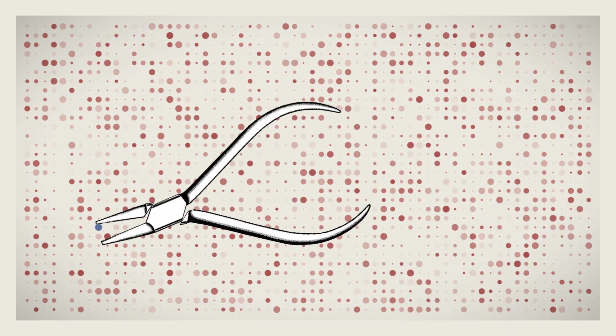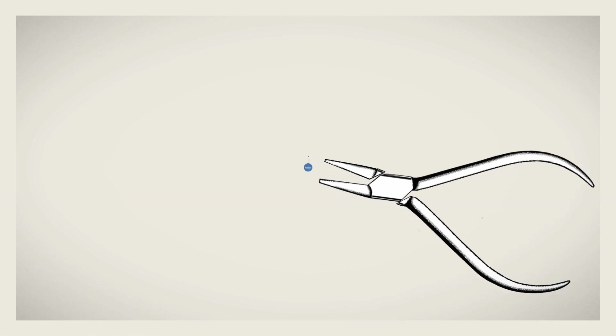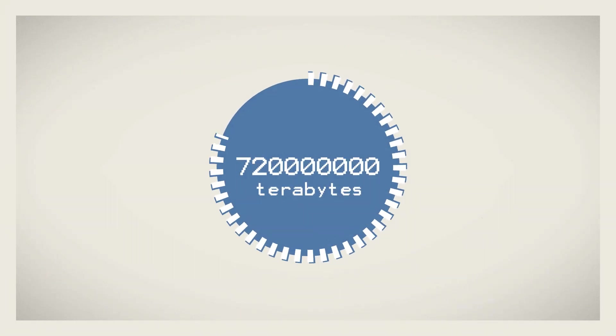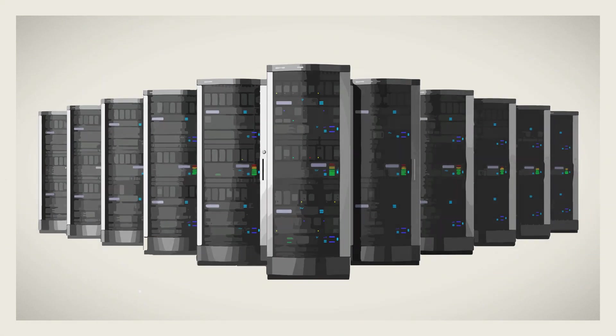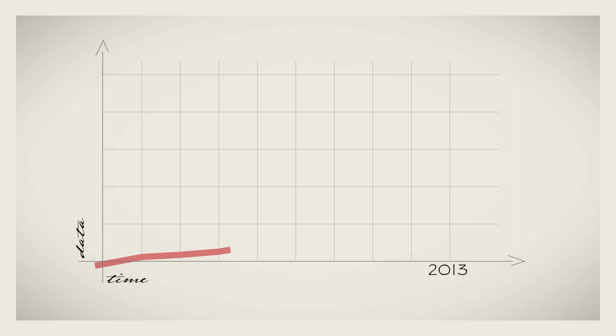Big Data refers to such vast collections of data in terms of volume, velocity, and variety that require specific technologies in order to extract value. The vastness of the data, in the order of zettabytes or billions of terabytes, needs massive parallel computing power. Big Data is growing exponentially. Ninety percent of all the data available today has been created over the last two years.